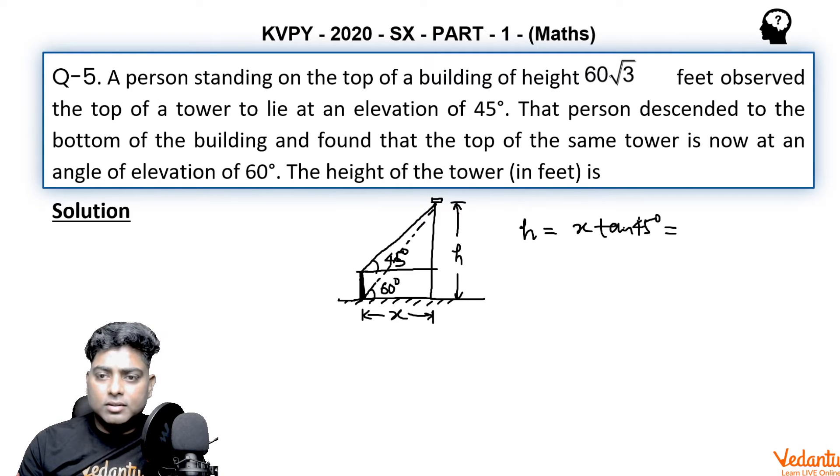h is also x tan 60 degrees. And h is also given as 60√3, so this height is given as 60√3. So h is also 60√3 plus this much. And this height is x because the same x is here, it is also x tan 45 degrees.